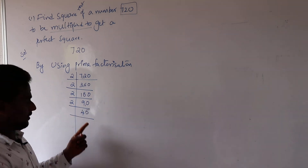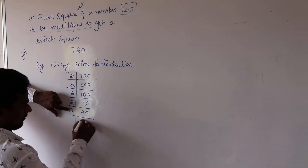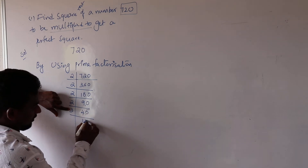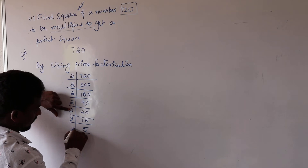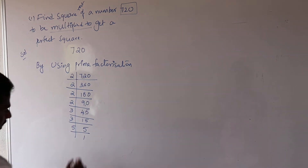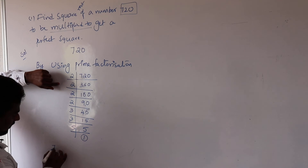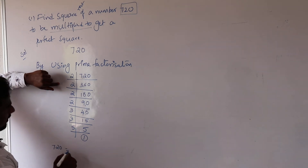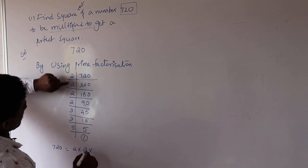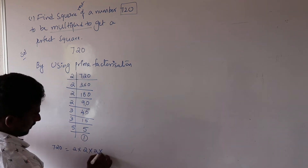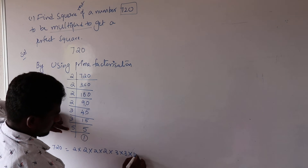We move to the next prime number. 45 is divisible by 3: 45 ÷ 3 = 15, 15 ÷ 3 = 5, then 5 ÷ 5 = 1. So 720 written as a product of prime numbers is 2 × 2 × 2 × 2 × 3 × 3 × 5, that is 2⁴ × 3² × 5.